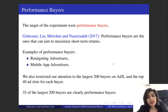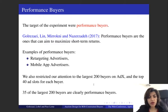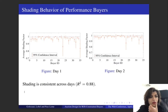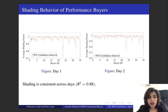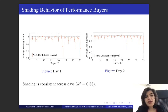In our analysis, we focus on performance buyers, such as retargeting advertisers or mobile ad advertisers. This type of advertiser is quite a large group. In particular, when we look at the largest 200 buyers by spending, we find that 35 of them are clearly performance buyers. Looking at their shading behavior across multiple days — here you see day one and day two with the average shading factor — a shading factor of one means bidding behavior did not change. We see that when we increase the reserve price, the shading factor becomes less than one, highlighting that performance buyers tend to submit lower bids, which is consistent with our theoretical results.